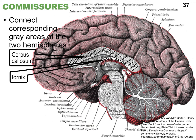To continue our discussion of the different kinds of fibers: association fibers stay within the same hemisphere; projection fibers run straight up and down between the spinal cord and the brain, such as the pyramids; and commissures interconnect your two cerebral hemispheres or even parts of the spinal cord.